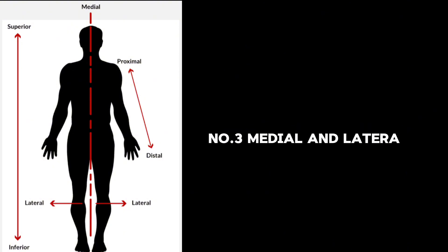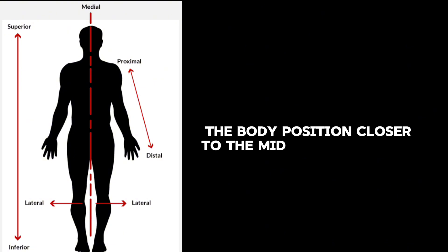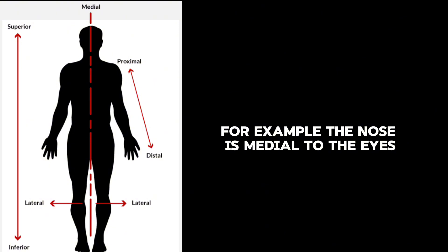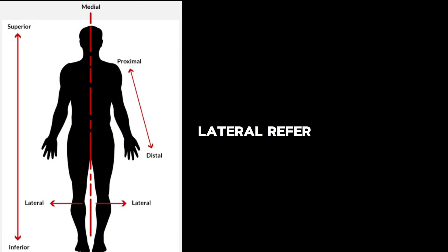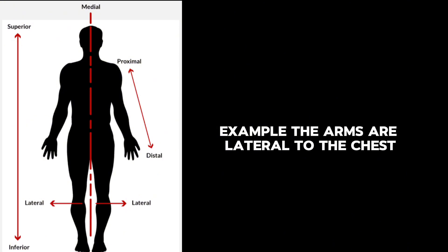Three: medial and lateral. Medial indicates a body position closer to the midline of the body. For example, the nose is medial to the eyes. Lateral refers to a position further from the midline. Example: the arms are lateral to the chest.